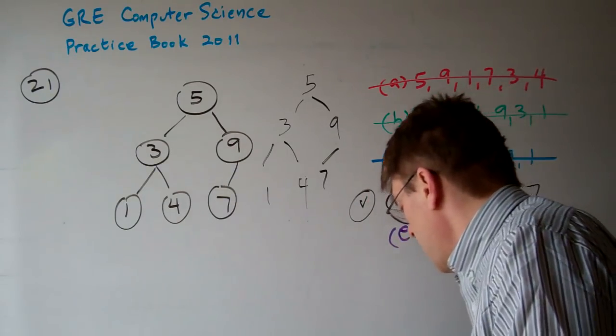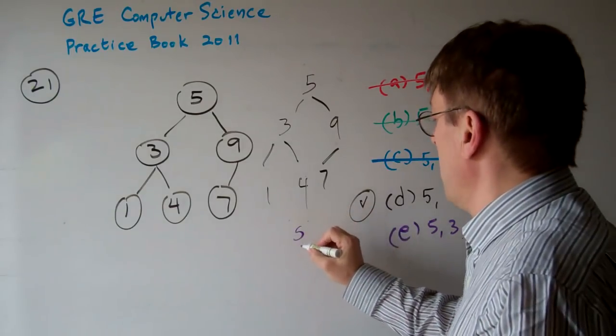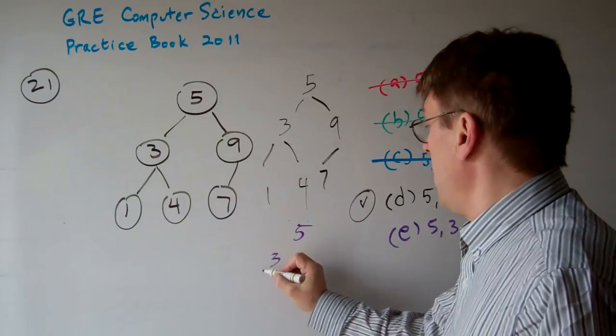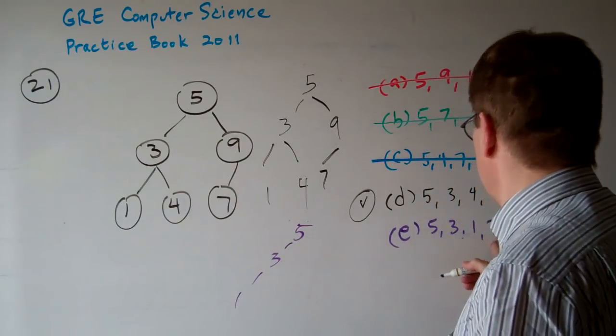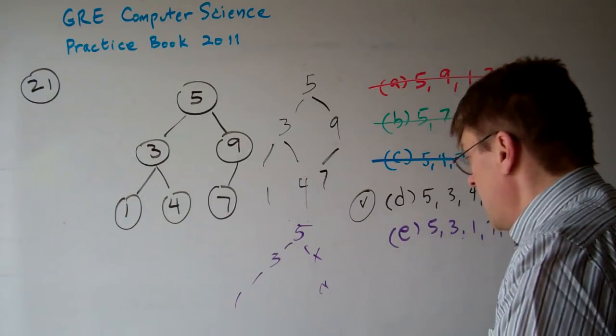Let's check out E though, just for fun. E would be 5, 3, 1. That works. 7. No, the 7's got to go down here. So the answer then, as you can see,